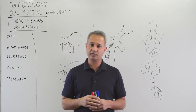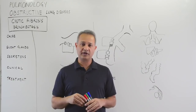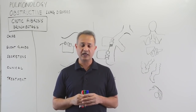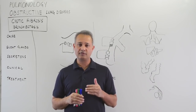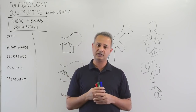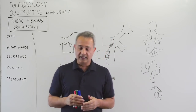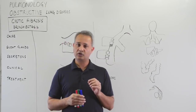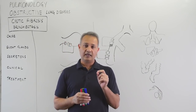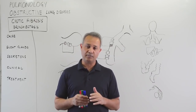This is Mubeen. We are talking about pulmonology pathology. We just did a disease called bronchiectasis, and one of the reasons for it is cystic fibrosis. It is important for us to understand what cystic fibrosis is, so this lecture is about cystic fibrosis. Cystic fibrosis is the most common hereditary disease which causes deaths in the United States.